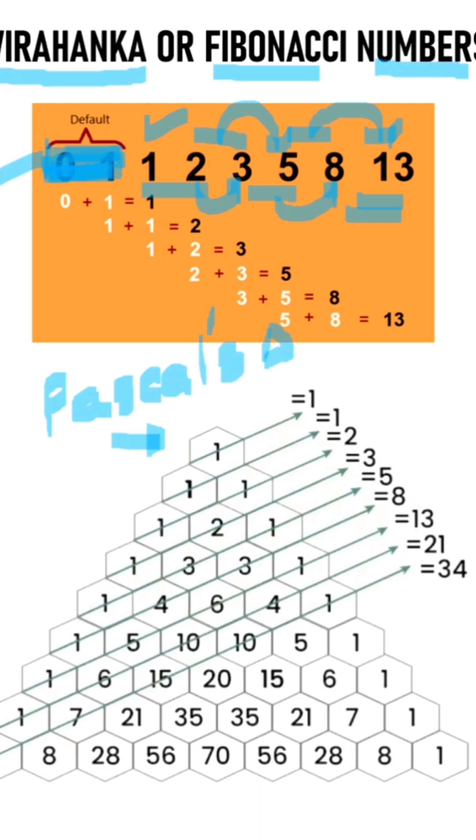You can see here the first row contains 1, then we have 1, 1, then we have 1, 2, 1. How did we obtain the 2? This 1 plus 1, I have written it in the middle. The sum 2 is written in the middle of 1 and 1.